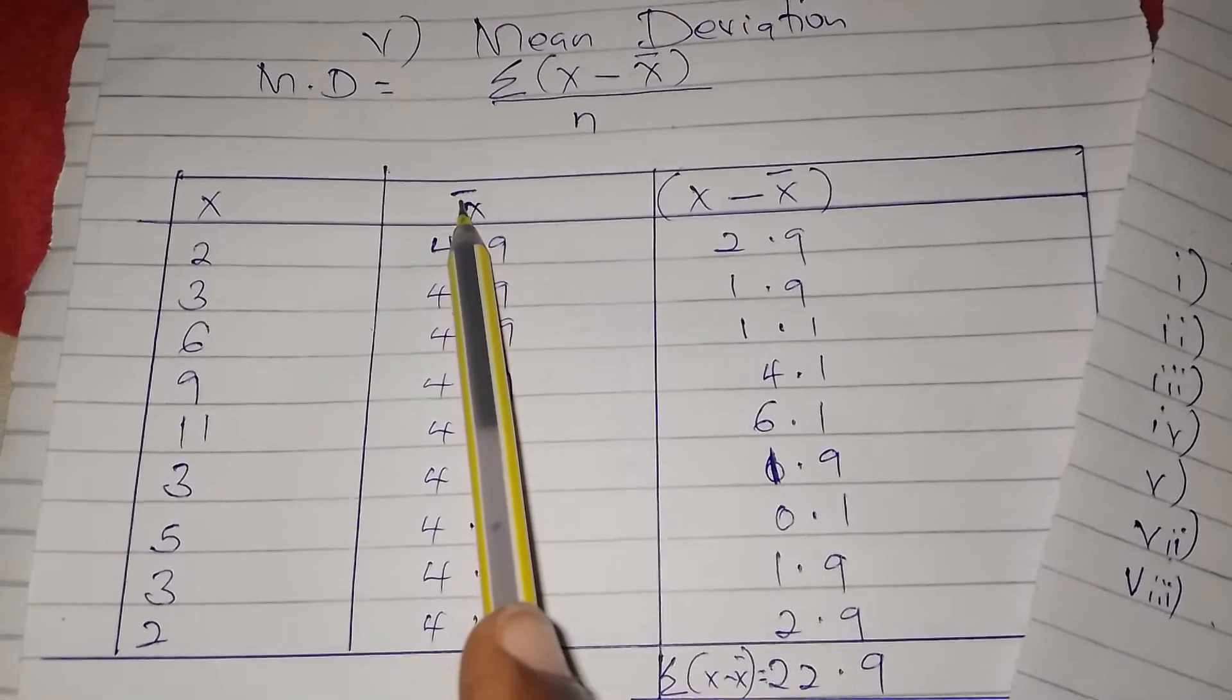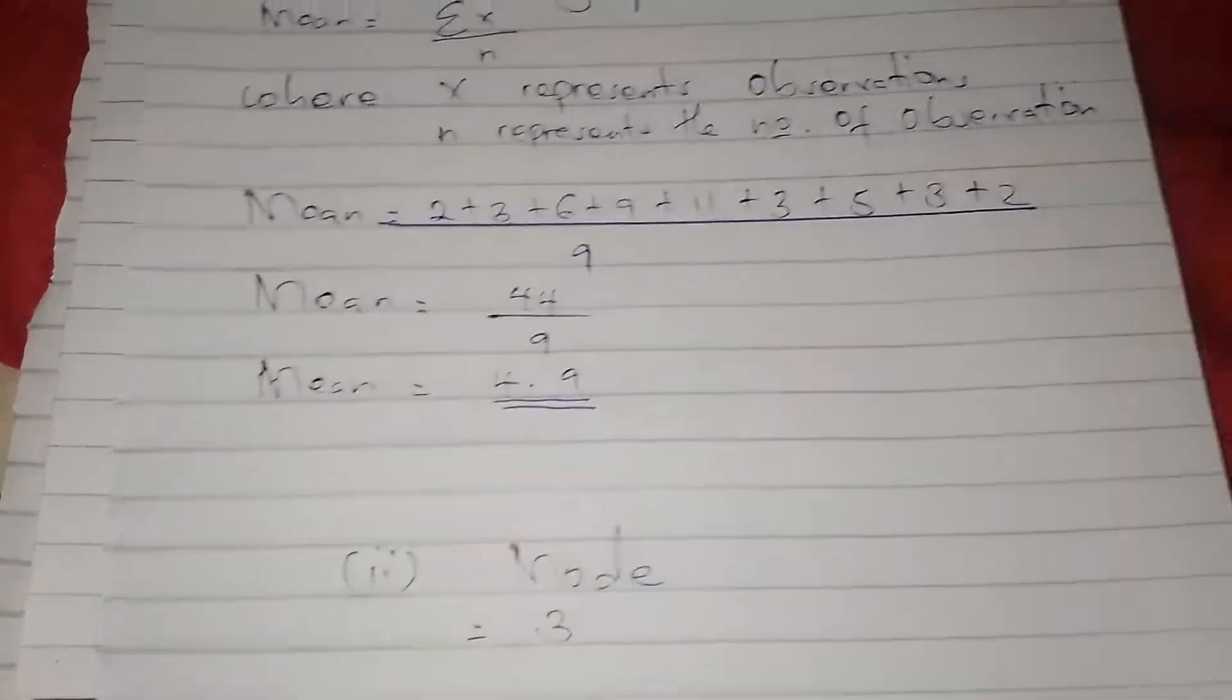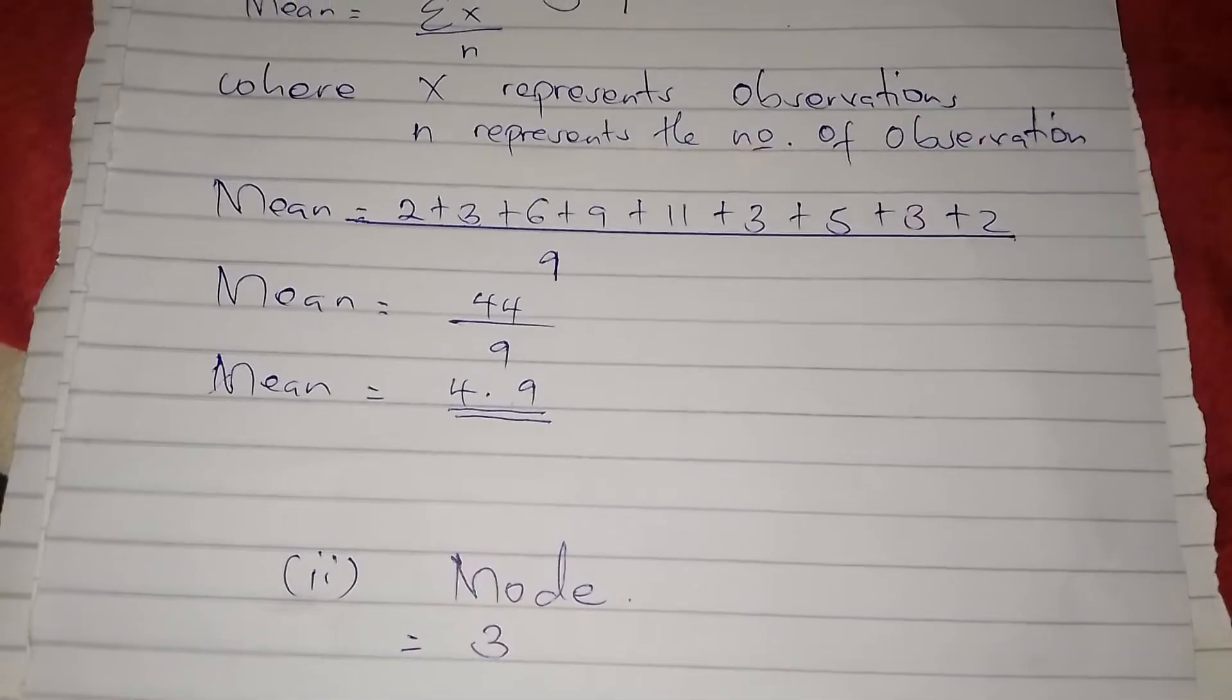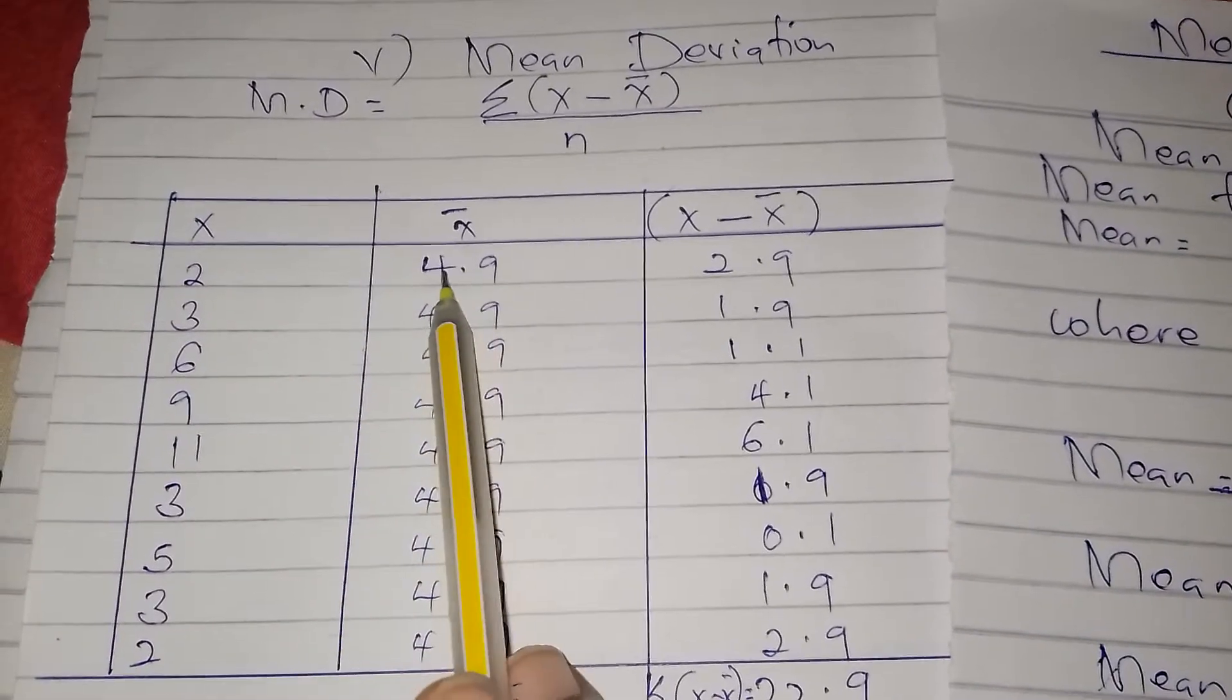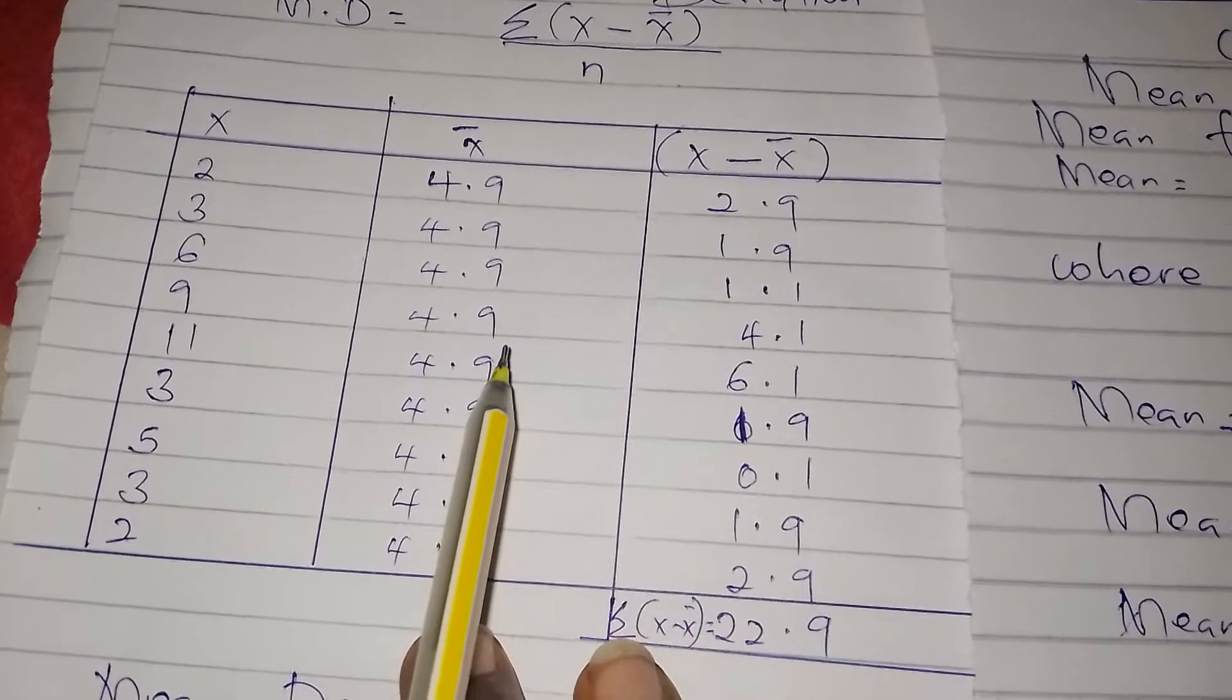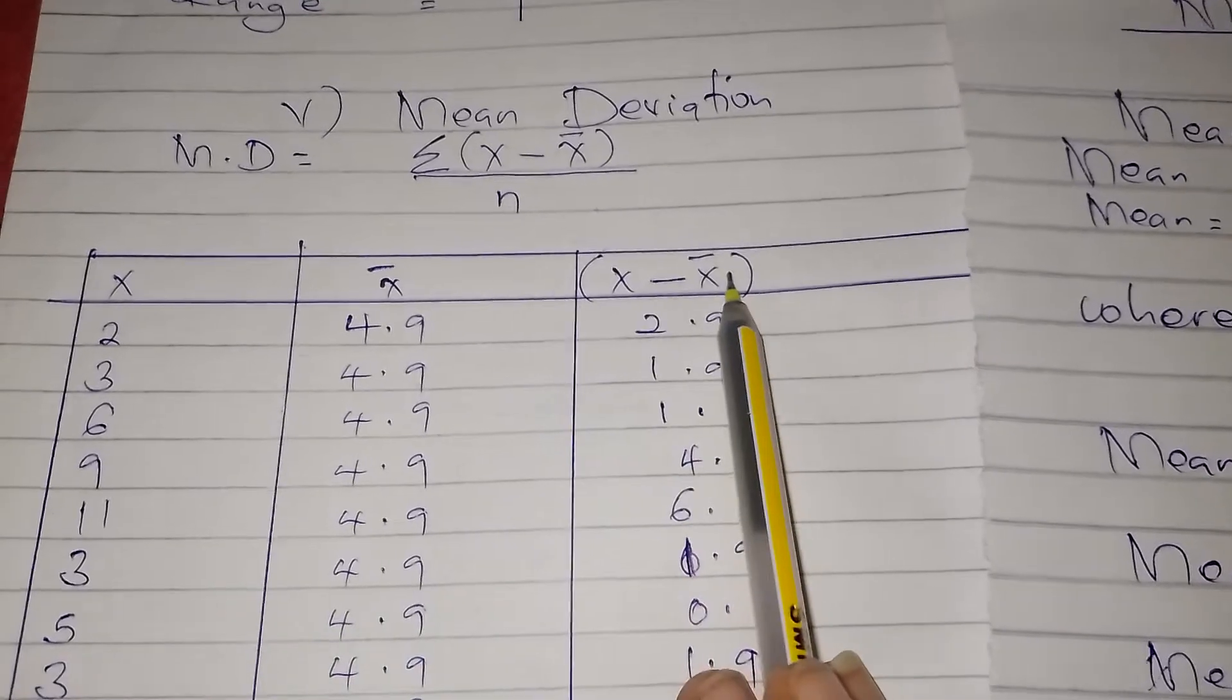Then we shall need the column of X bar. X bar is the mean. So the mean we had calculated in the previous video was 4.9. So we shall come here where there is X bar and put 4.9 for all the spaces. It is the same, it does not change.